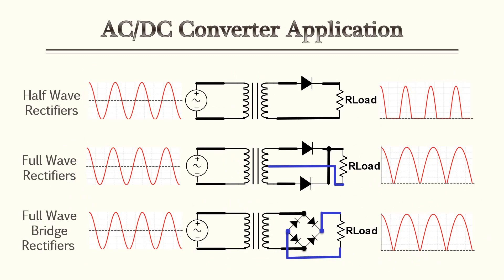Diodes have multiple applications. One of the most common is an AC to DC converter, and these are known as rectifiers. Looking at the illustrations, there are three rectifiers shown: a half-wave, a full-wave, and a full-wave bridge rectifier. All three take a sine wave and convert it to a single positive wave.